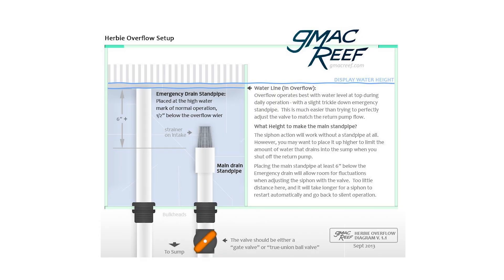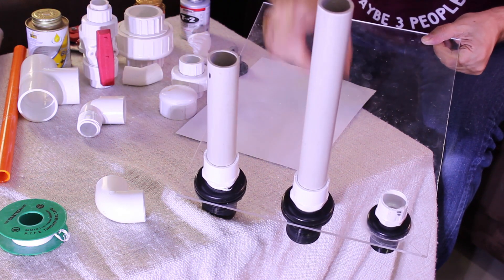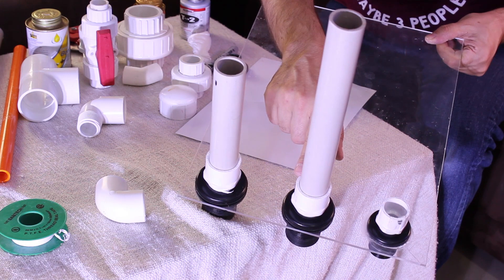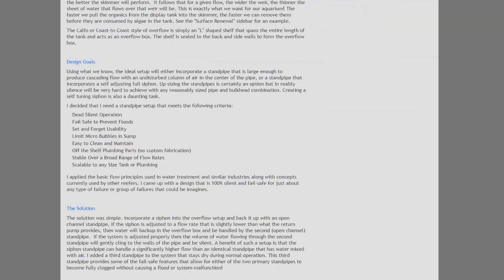Herbie overflow has two standpipes. One with a valve to tune the flow and the other one is higher and used for emergency if the main pipe is clogged.